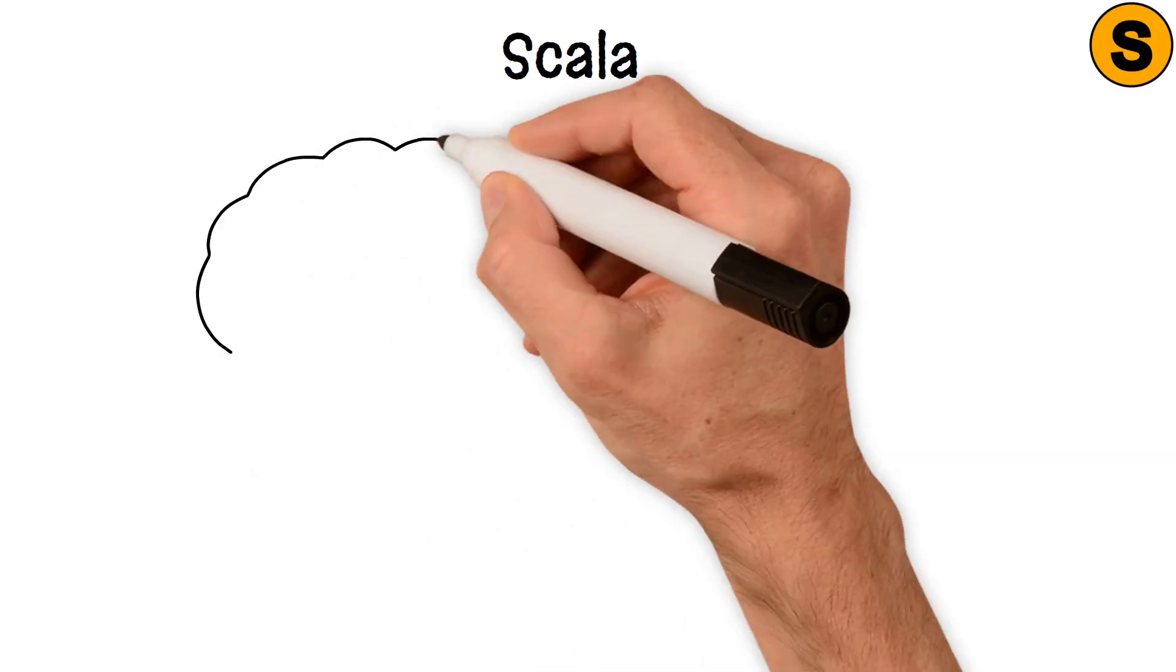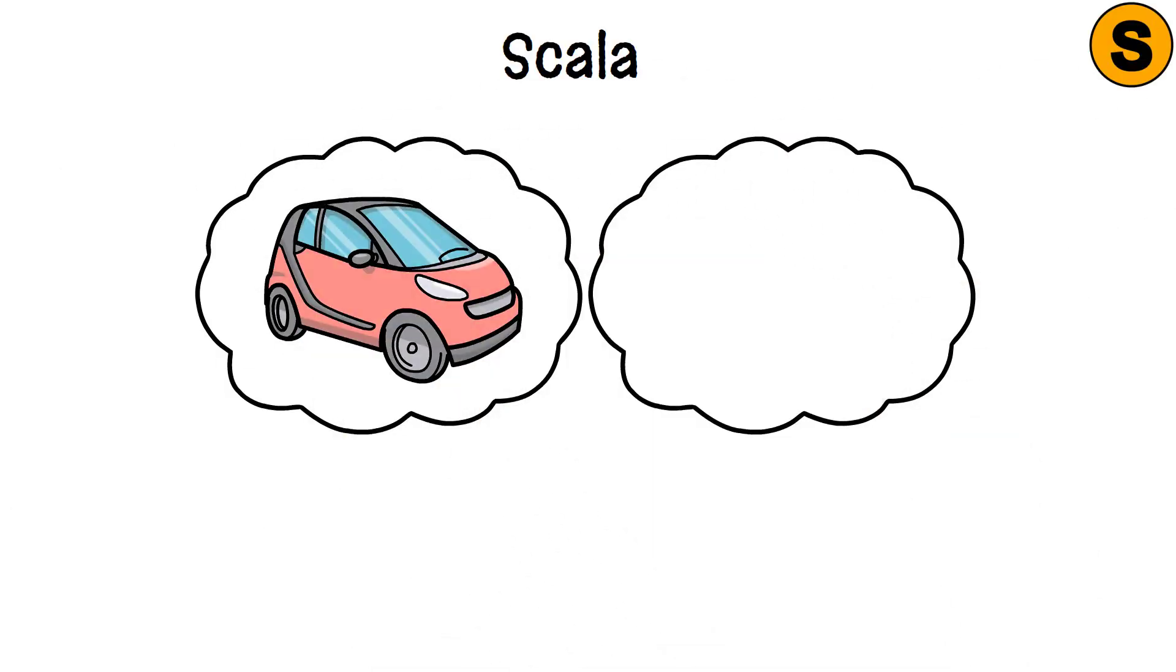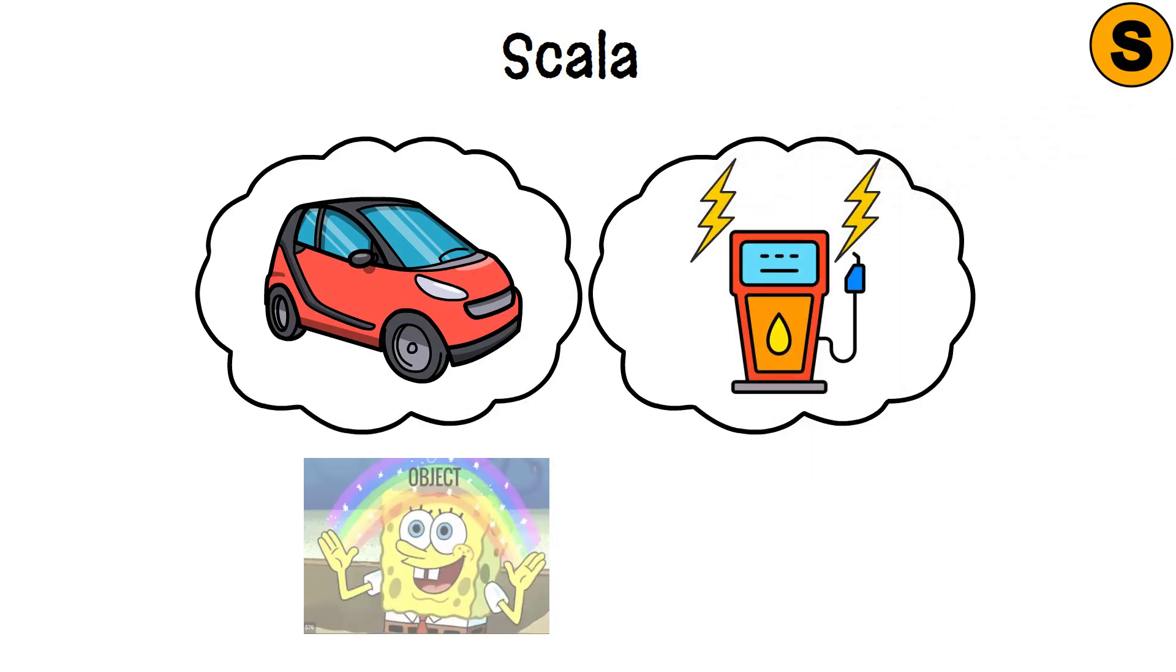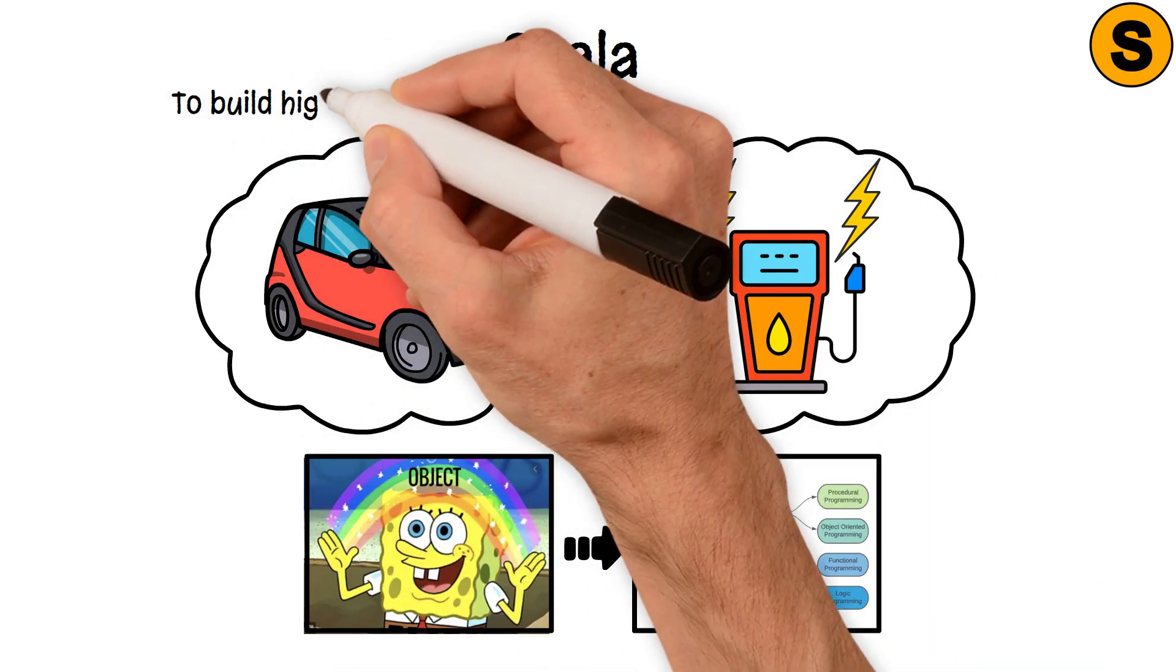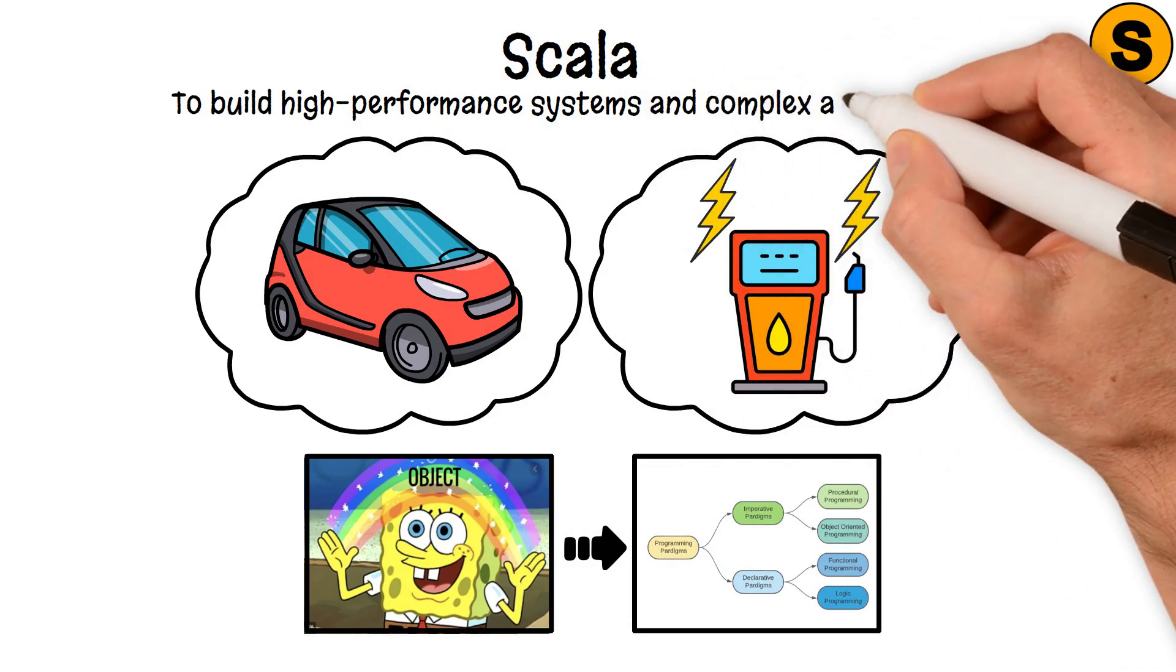Scala. Scala is like a hybrid car that combines the efficiency of electric power with the range of gasoline. It blends object-oriented and functional programming paradigms to build high-performance systems and complex applications.